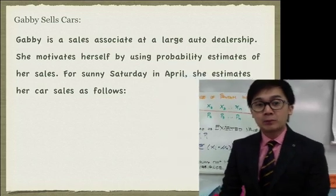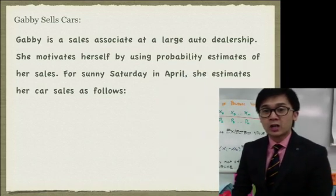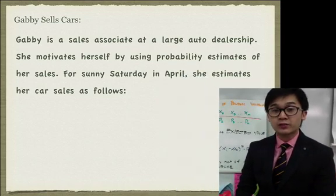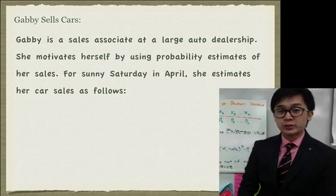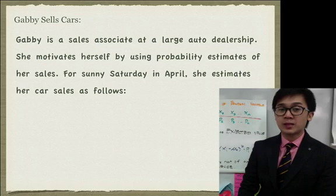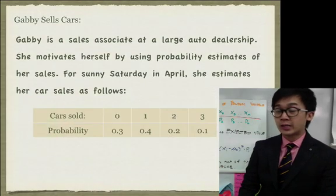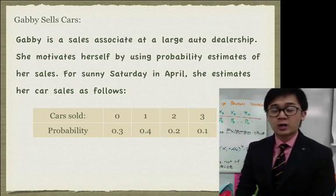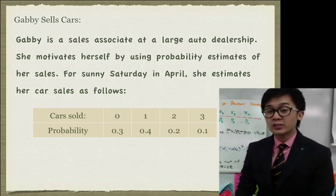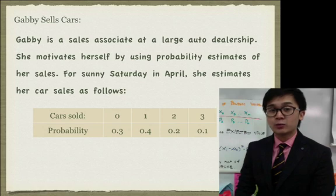In this example, Gabby is a sales associate at a large auto dealership and she's motivated by using probability estimates of her sales. For a sunny Saturday in April, she estimates her car sales as follows. For not selling any cars, the probability of that happening will be 30 percent. One car will be 40 percent, two cars will be 20 percent, and three cars will be 10 percent.